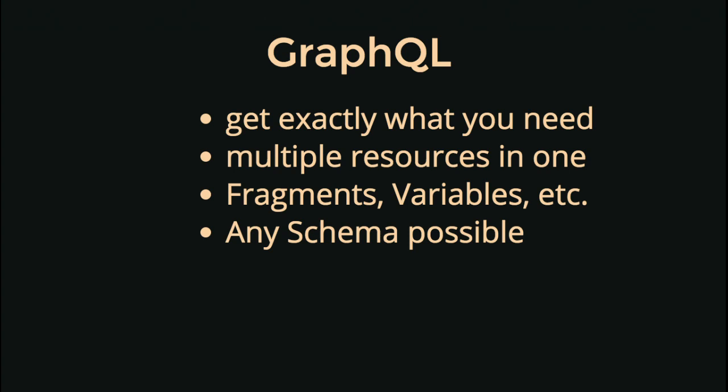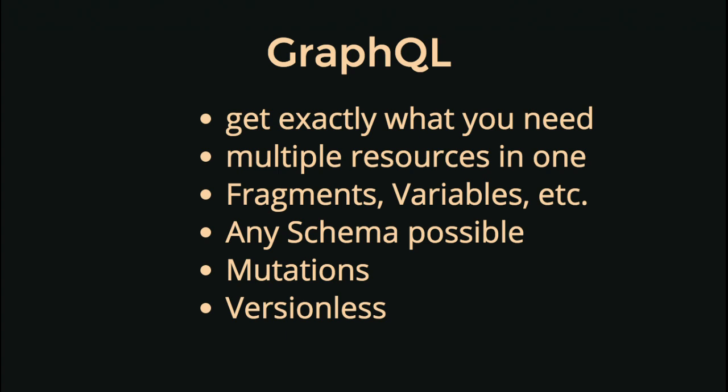GraphQL gives you exactly what you need. You can run multiple resources at once, query multiple things at once. And what I showed you actually goes much further — you have fragments, you can inject variables that you can reuse. Any schema is possible. All the fields we requested, the person writing the GraphQL API can define them completely on their own. We can not only request stuff, we can also create stuff and change stuff — so we have full mutation support. And there is no versioning of a GraphQL API, because if you're adding another field, you just add it and the consumer can just request it.